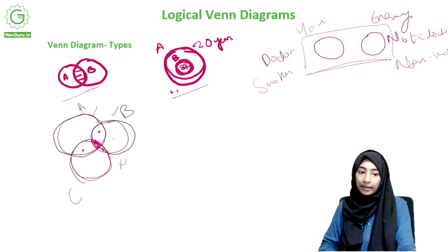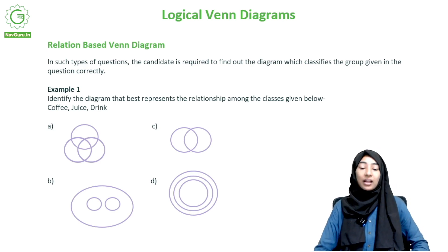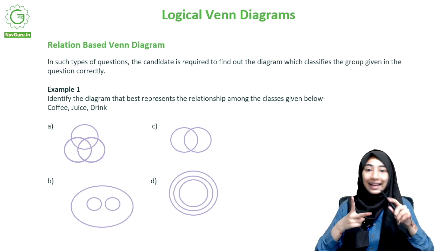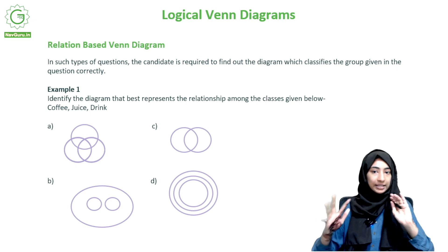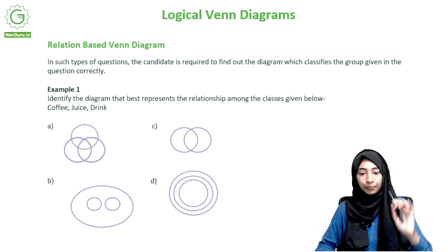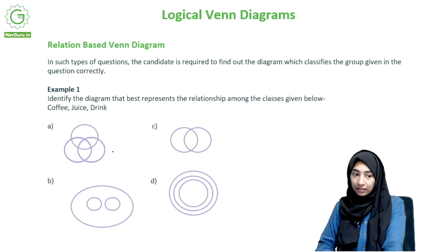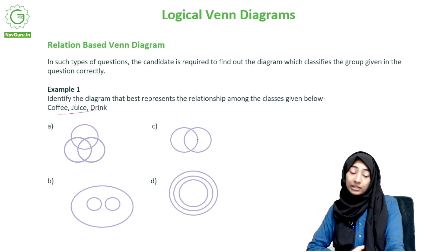So the types are: overlapping, one contained in the other, and no overlap at all. For your entrance exams in eighth or ninth grade, there are mainly two kinds of Venn diagram questions: relation-based and analysis-based. For relation-based questions, you are given three things and you need to find out the suitable Venn diagram. For example: identify the diagram that best represents the relationship among coffee, juice, and drink.